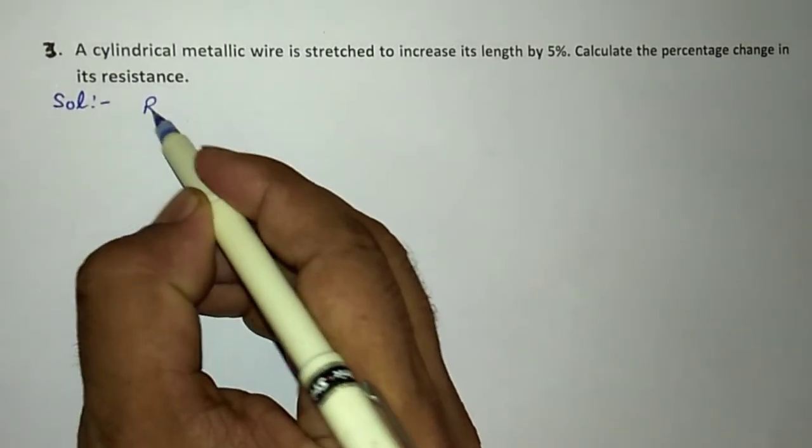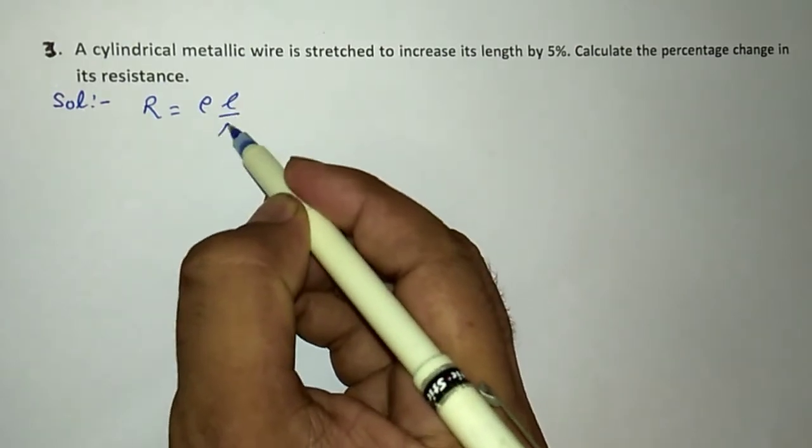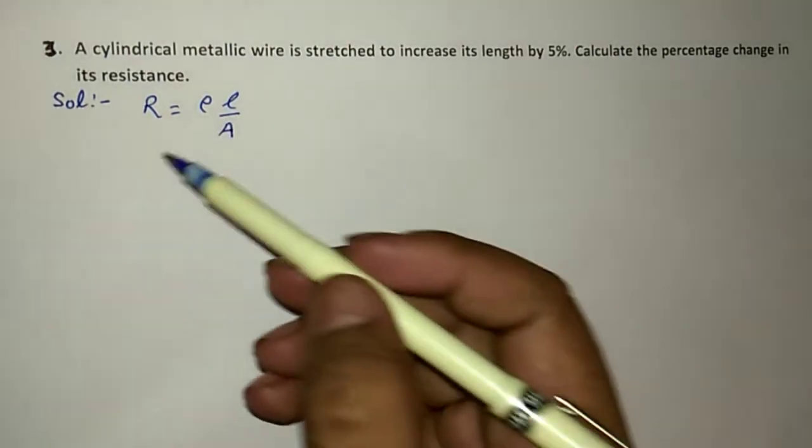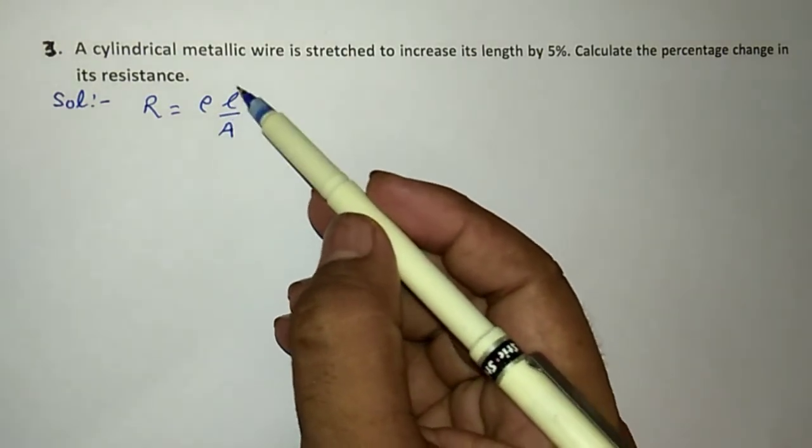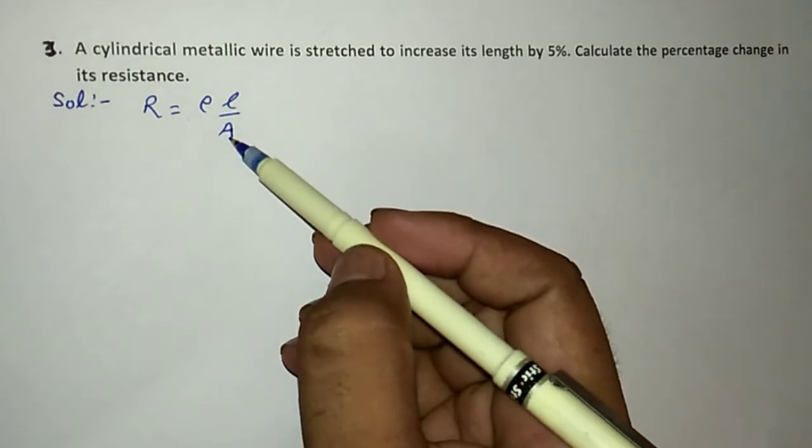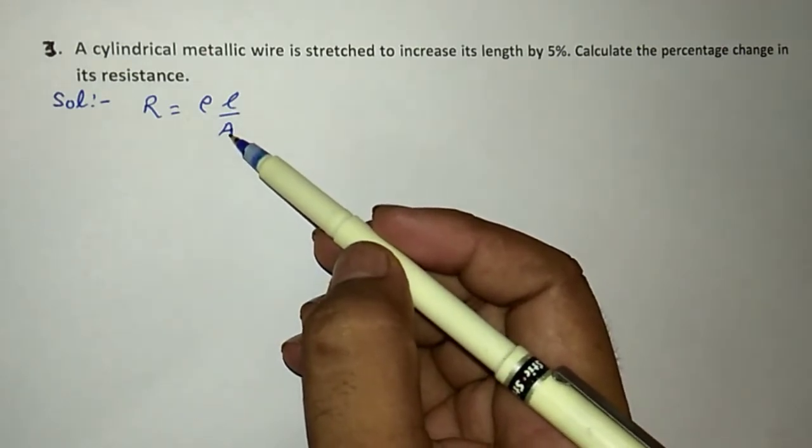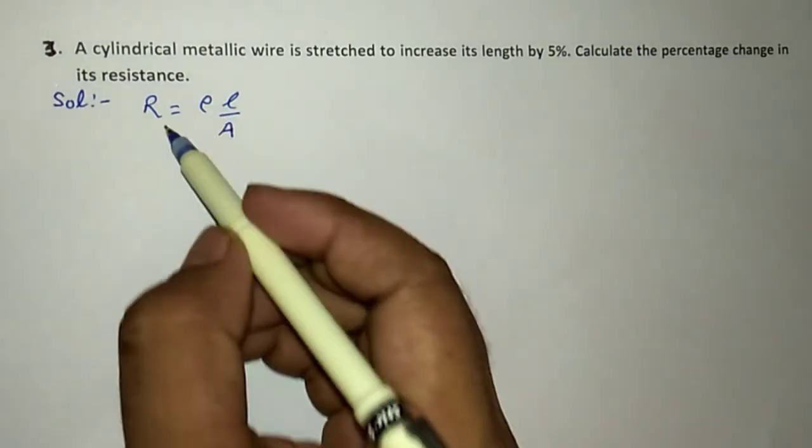Resistance R equals ρL/A. The resistance of a conductor depends on two factors: length of the conductor and cross-sectional area. Here, resistivity is constant.